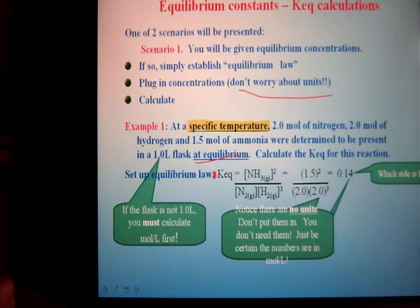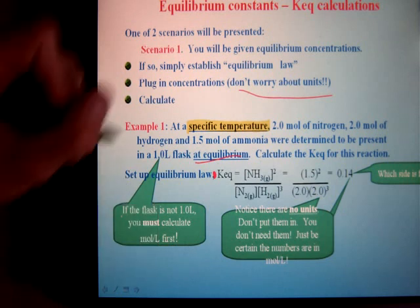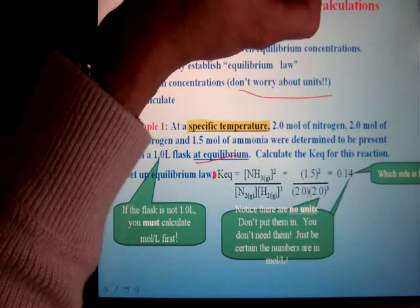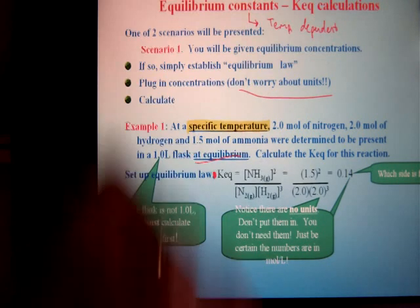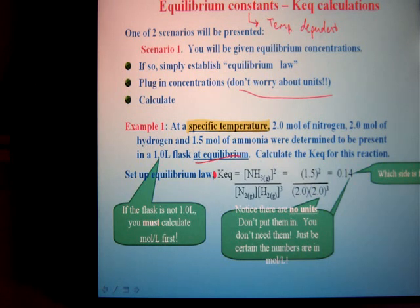One thing I'd like to point out here, since this is at a specific temperature, equilibrium constants are what we call temperature dependent. What that means is that every reaction that can attain equilibrium could have a different equilibrium constant depending upon the temperature of the reaction.